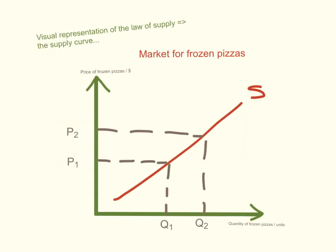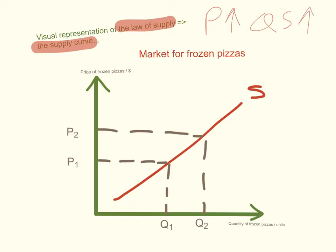So how is the law of supply visually represented? It is represented through the supply curve. We know that when price rises, quantity supplied usually increases — there's a positive causal relationship — and this is how we draw a supply curve. It's a positively sloped curve: when price rises, quantity supplied increases; when price falls, quantity supplied will usually decrease.